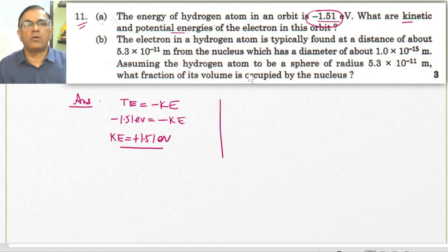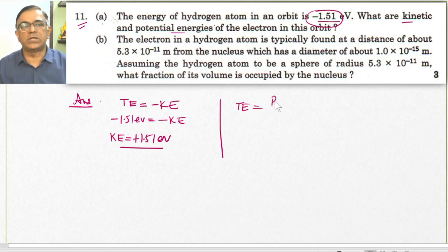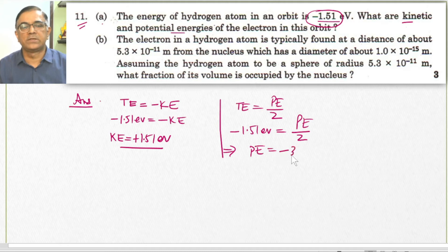Further, we are also supposed to find the potential energy of the electron in the same orbit. We know that total energy equals potential energy divided by 2. Since total energy is minus 1.51 electron volts, the value of potential energy should be minus 3.02 electron volts.